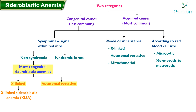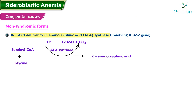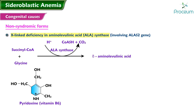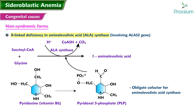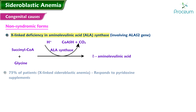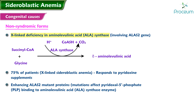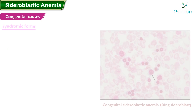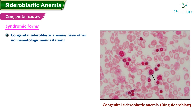Non-syndromic forms: most congenital sideroblastic anemias are non-syndromic. They can be X-linked, referred to as X-linked sideroblastic anemia (XLSA), or autosomal recessive, referred to as autosomal recessive congenital sideroblastic anemia (ARCSA). X-linked deficiency in aminolevulinic acid (ALA) synthase involves the ALAS2 gene. Pyridoxine (vitamin B6) is converted in the liver to the active coenzyme pyridoxal-5-phosphate (PLP), an obligate cofactor for ALA synthase. Approximately 75% of patients with XLSA respond to pyridoxine supplements, enhancing the function of some ALAS2 mutant proteins, particularly when mutations affect PLP binding to the ALA synthase enzyme.